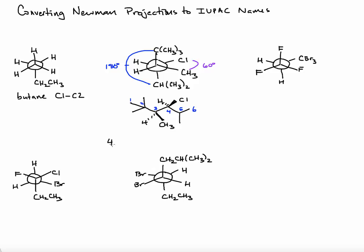We name this as 4-chloro, then the methyl substituents. We have four of them: two at position two, then at three and five — so 2,2,3,5-tetramethyl. The parent is hexane. The overall name is 4-chloro-2,2,3,5-tetramethylhexane.